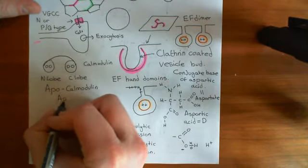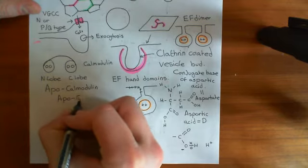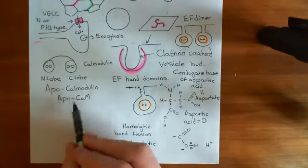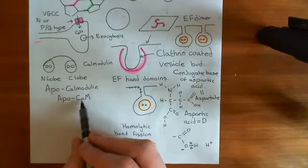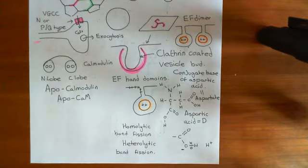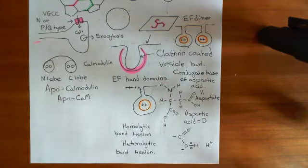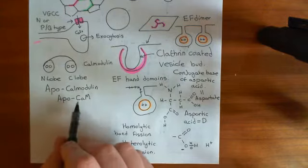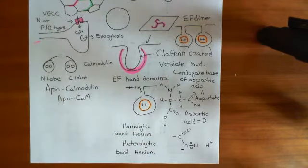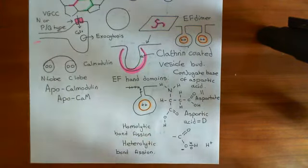The shorthand for apocalmodulin is to call it apoCaM, where you have a capital C, lowercase a, capital M. This shorthand — capital C, lowercase a, capital M — is also just the shorthand for calmodulin generally.